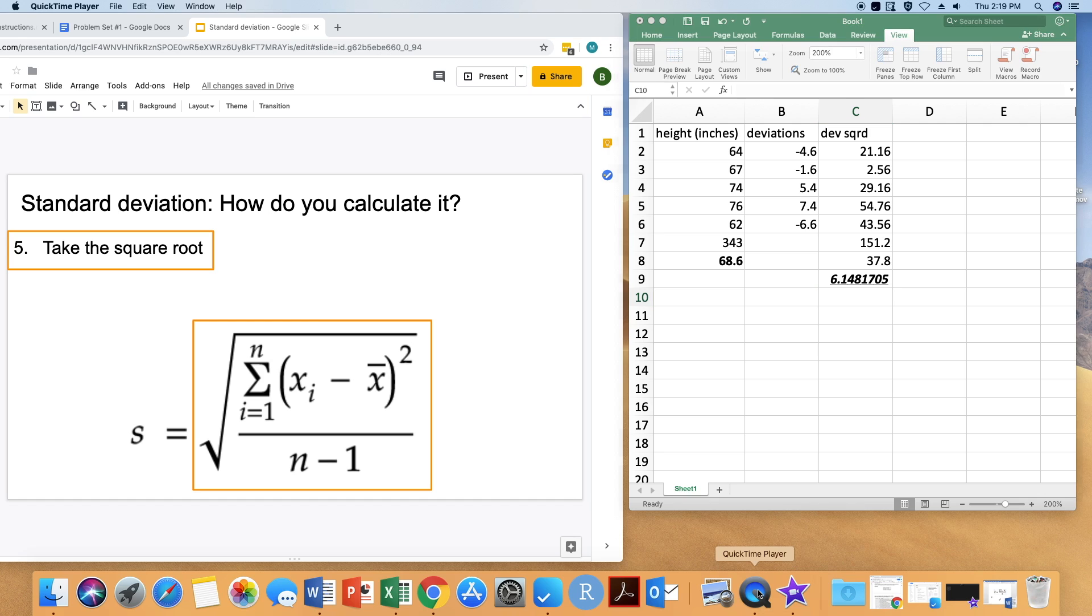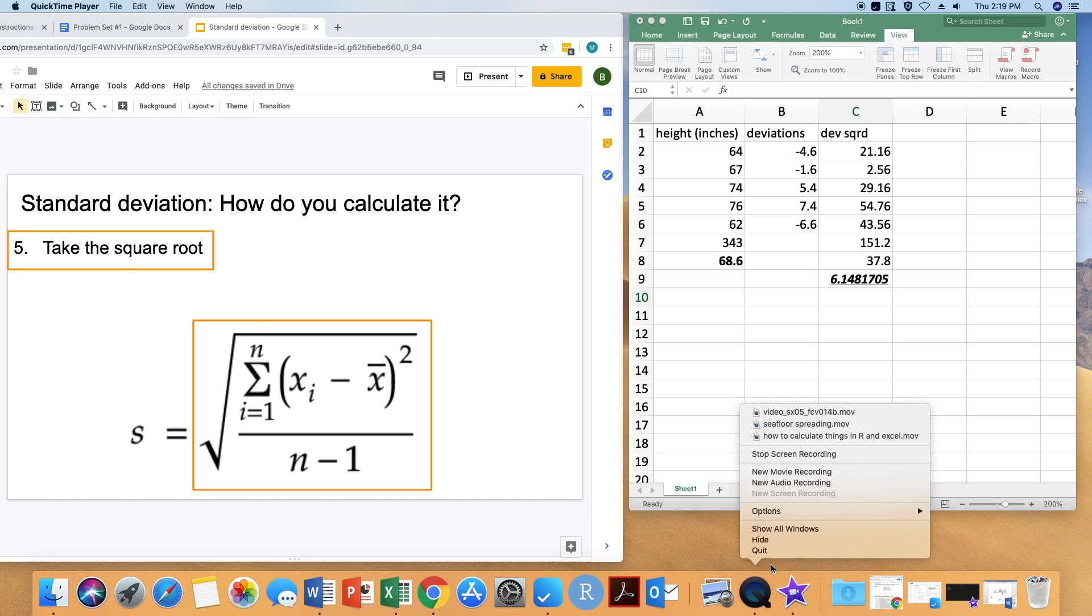So what do you think about the standard deviation? Considering that the average height is about 68.6 inches, and the standard deviation is 6.15. Consider what that means. Is this a broad distribution or a skinny one?